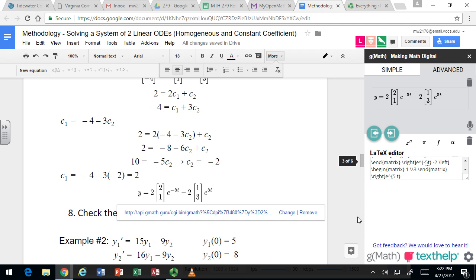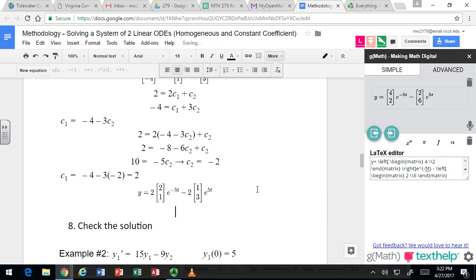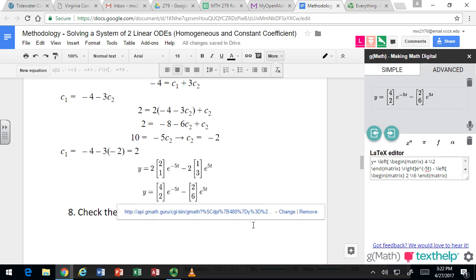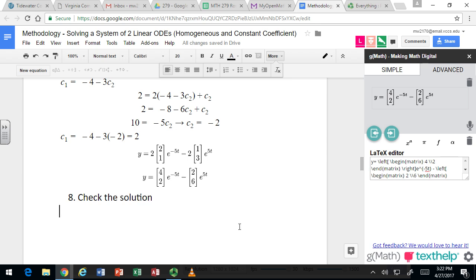So let's state the solution with c₁ = 2 and c₂ = -2. There's the solution. You can bring c₁ and c₂ into those vectors now if you want. That makes it look cleaner: [4, 2] and then -2 gives [2, 6]. You can also write it like that. And that's solving a system of two linear ODEs that are homogeneous with constant coefficients.